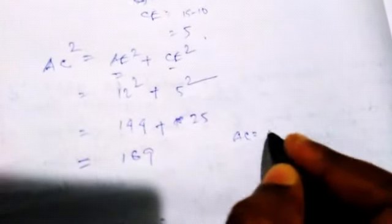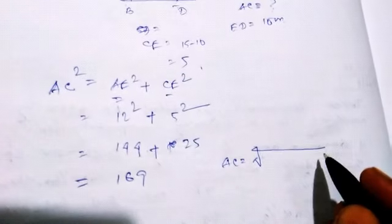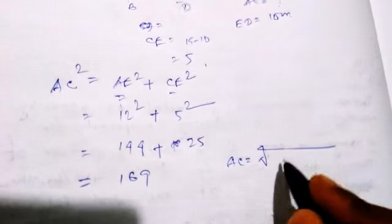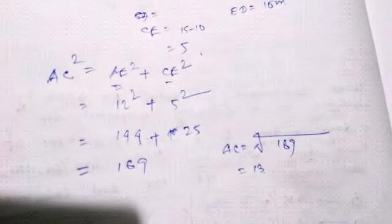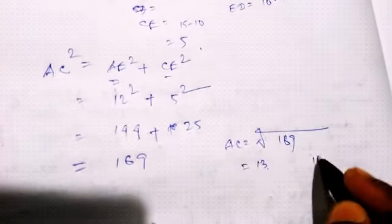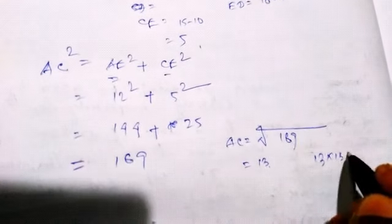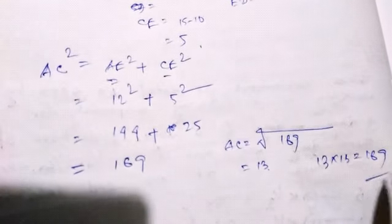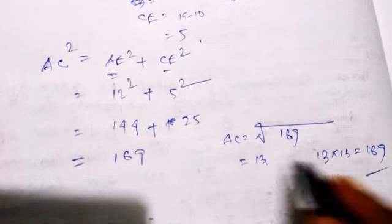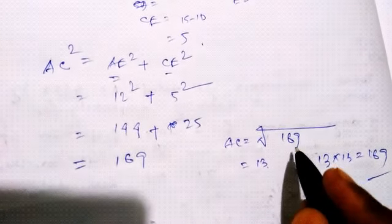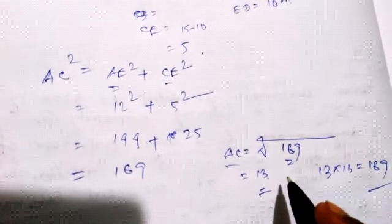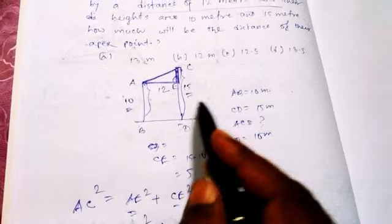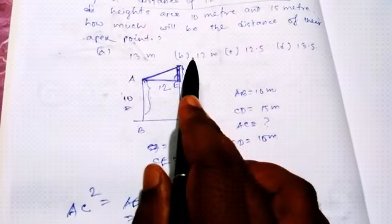So AC will be the root of 169, that will be 13, because 13 into 13 makes 169. The options were: (a) 13 meters, (b) 12 meters, (c) 12.5, and (d) 13.5.